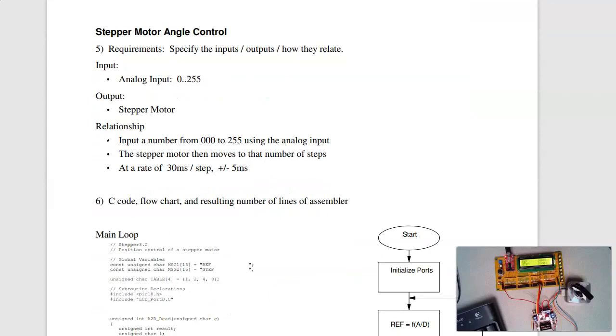The next set of problems. I want to control a stepper motor. So here's what I want it to do. I want to have an analog input. That inputs the number 0 to 255. My output is the stepper motor. As I turn the knob, that specifies where the motor should go. And the motor goes to that angle.